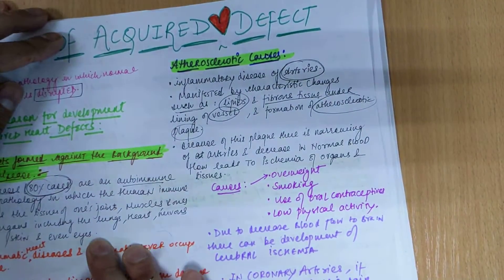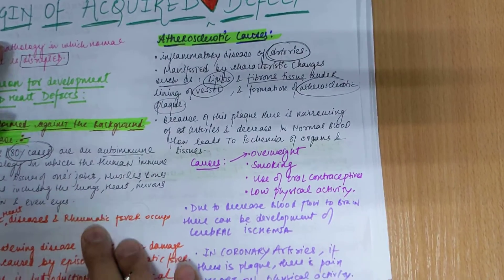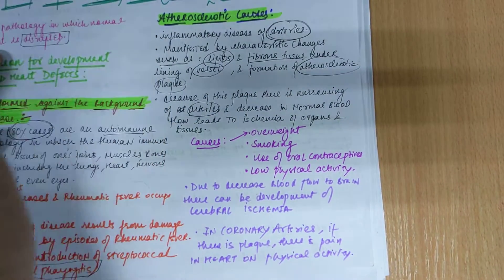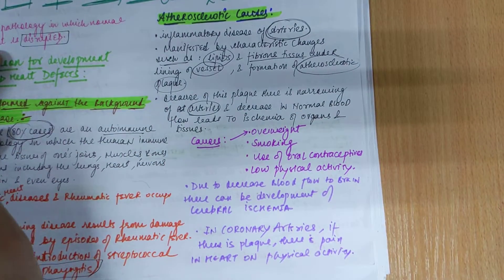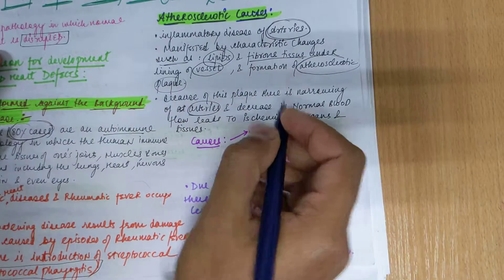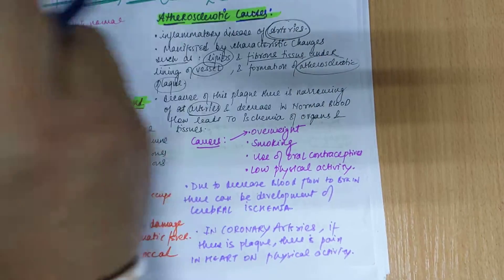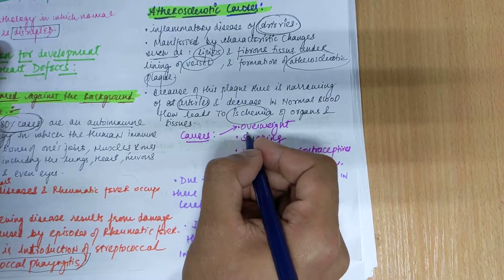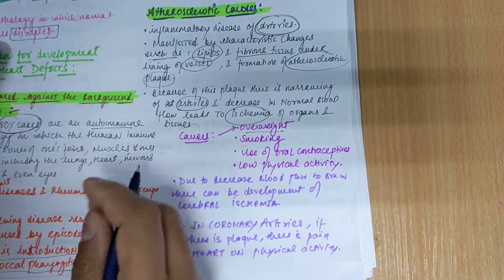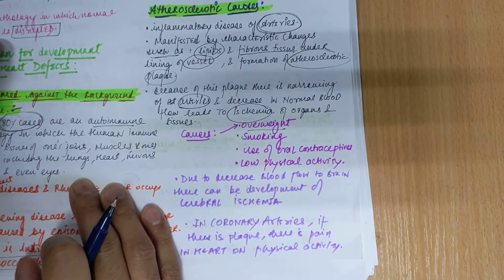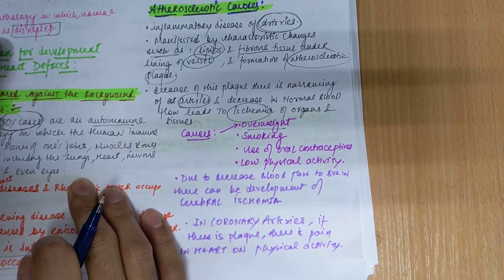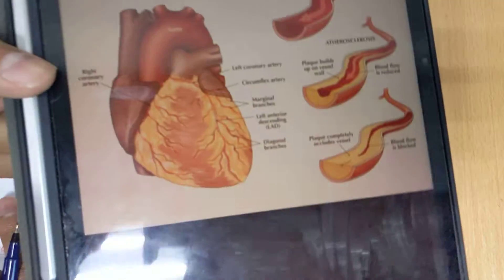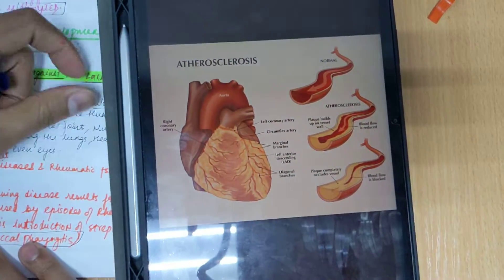This atherosclerotic plaque leads to narrowing of the arteries, causing a decrease in normal blood flow. There can be disruption of blood supply to the heart, leading to decreased oxygen delivery to tissues and organs, and development of ischemia in that region. Causes of atherosclerosis include overweight and obesity, smoking, use of oral contraceptives in females, and low physical activity or a sedentary lifestyle.